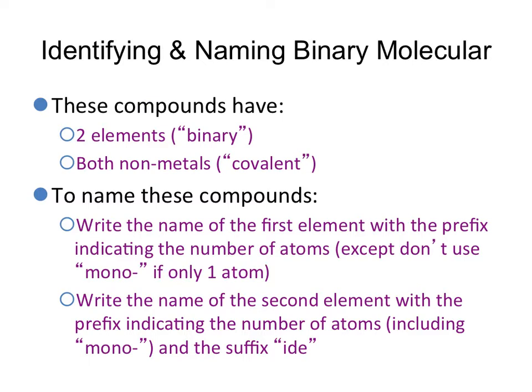If the number of atoms is 1, and you will know that by looking at the subscript, we would not use the prefix mono in this position. We're then going to look at the second non-metal. We're going to write the name of the second non-metal with its prefix indicating the number of atoms. This time, if it is 1, we will include the prefix mono. And then we will add the suffix ide.